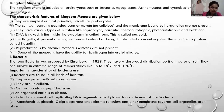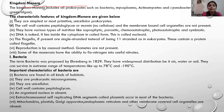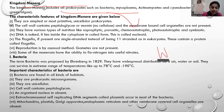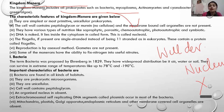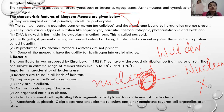You can see on the screen the characteristics and features. First of all, Monera is the first Kingdom. What is Monera? Prokaryotes. Prokaryotes are the ones that have not developed a well-developed nucleus — that is the major feature of prokaryotes.